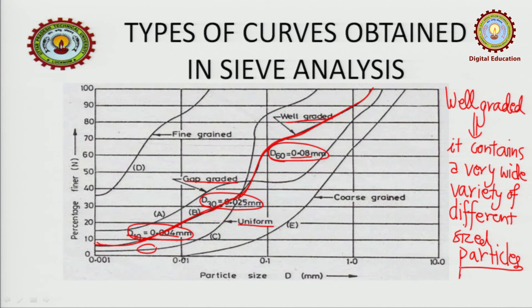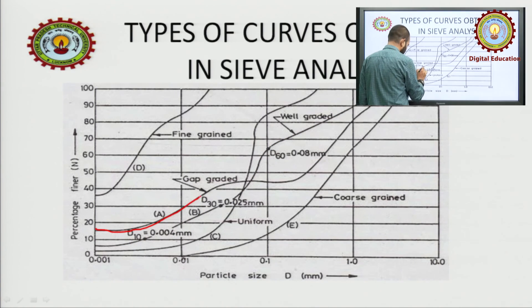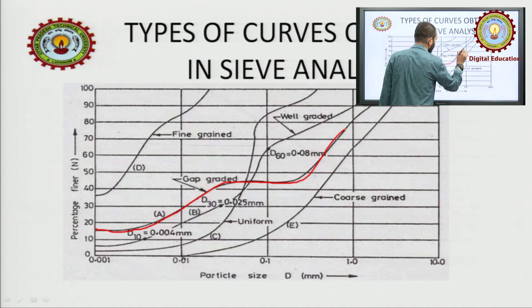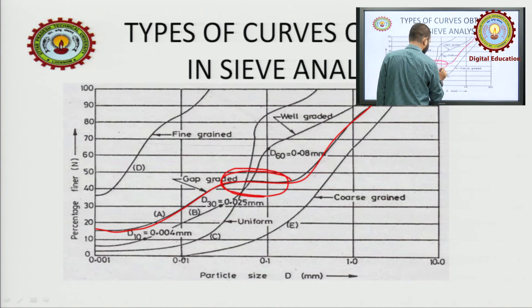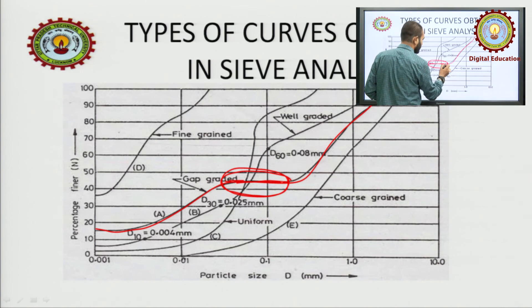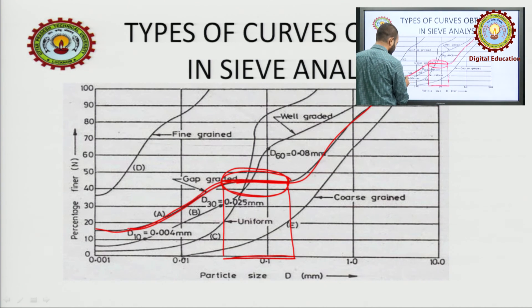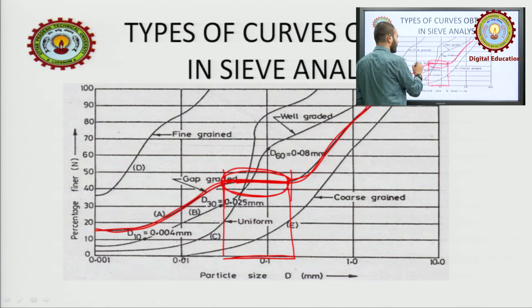Now let us talk about gap graded. What is gap graded? This curve here is called gap graded. You can see it is also a long curve, starting from one end and going up to the other, but it is not called well graded because you can see this part here — it is flat. What does this mean? That in this region, there are no soil particles of this size. It has particles here and particles there, but no particles in this intermediate range — there is a gap in particle size in this region. So it is called gap graded.